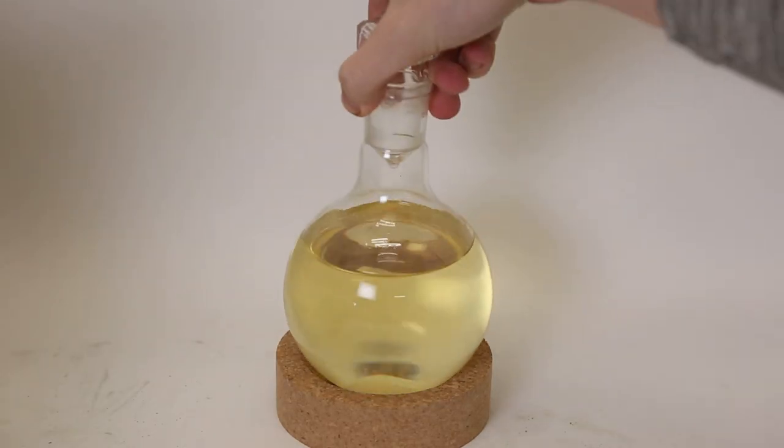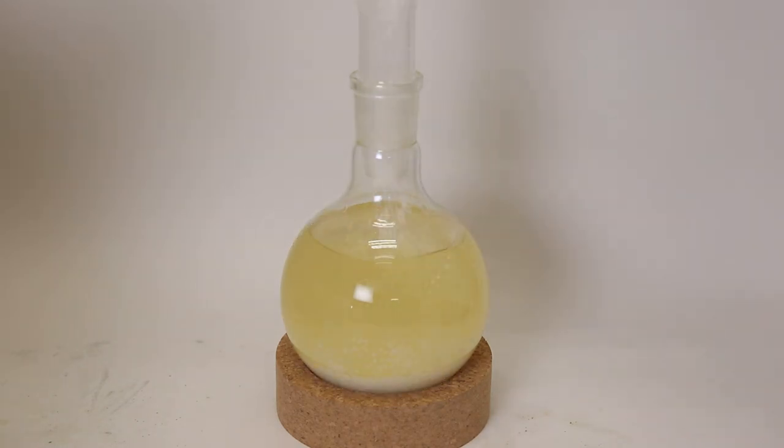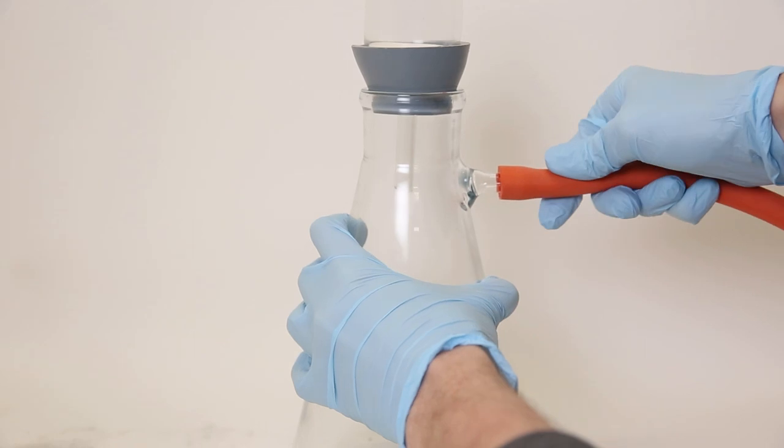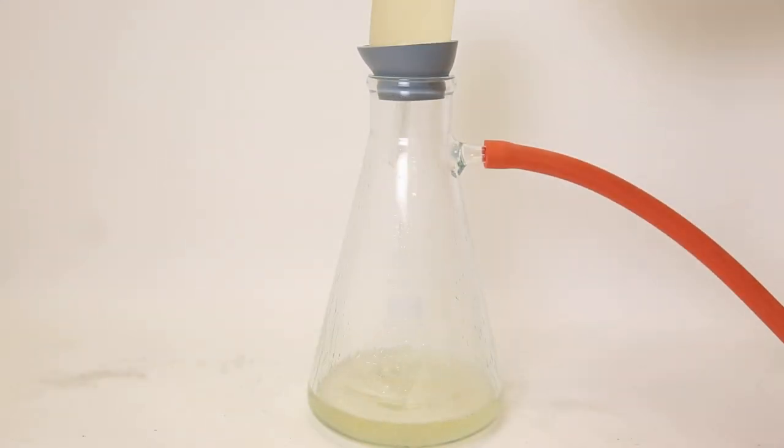After washing and boiling the biodiesel, there still is water left in the biodiesel from the washing steps. So like I did with the sunflower oil, I dry the biodiesel with calcium chloride, and then, after it has been sitting for a day, I set it up for a vacuum filtration to filter it all out. This time I can use a glass filter, since biodiesel is a lot less viscous than sunflower oil, and it can pass through much easier.